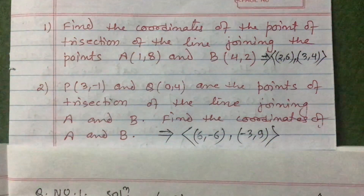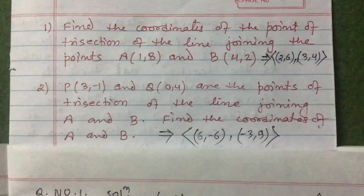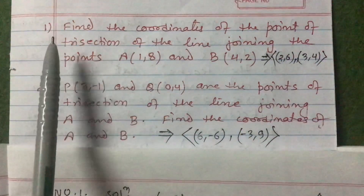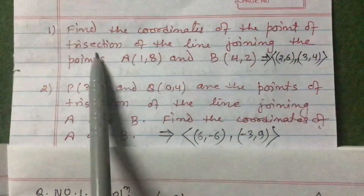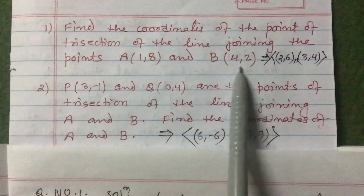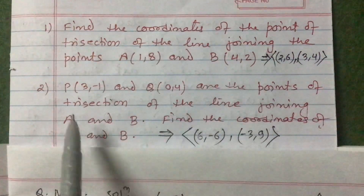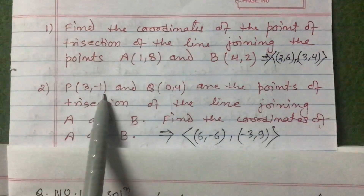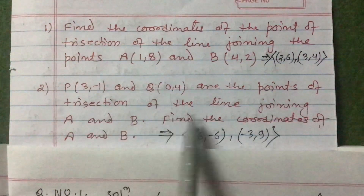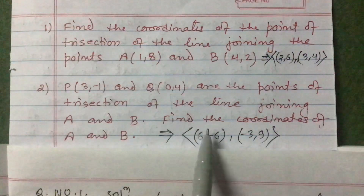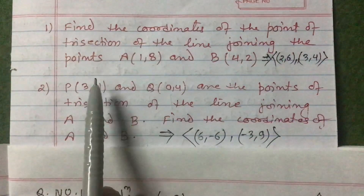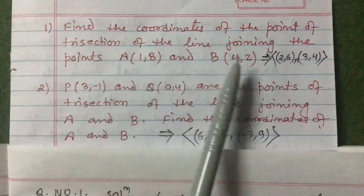Students, today I am going to teach you two questions related to section formula. The first question is: find the coordinates of the point of trisection of the line joining the points A(1, 8) and B(4, 2). The second question: P(3, -1) and Q(0, 4) are the two points of trisection of the line joining A and B — find the coordinates of A and B.